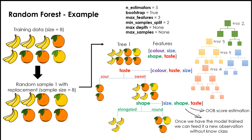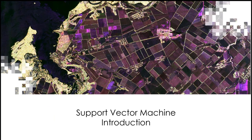We can then estimate the out-of-bag score to see how our model performed during training. Finally, we can feed it a new observation for which we need to know the class, or test it with an independent validation dataset. Next, we will talk about the support vector machine algorithm.